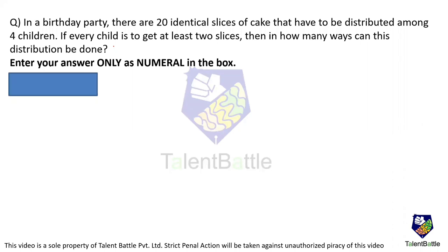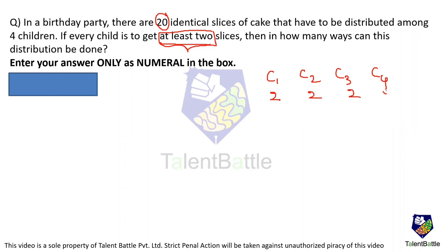In a birthday party there are 20 identical slices of cake that have to be distributed among four children. If every child is to get at least two slices, then in how many ways can this distribution be done? Total there are 20, and every child should get at least two — minimum is two. Let me consider the children as C1, C2, C3 and C4. At least two every child should get, so let me fix two slices each — that is 8 slices fixed. Total 20 minus 8 leaves 12 slices remaining.